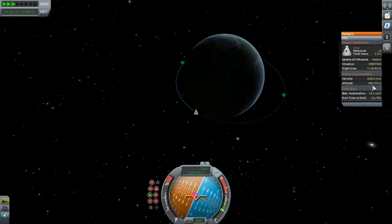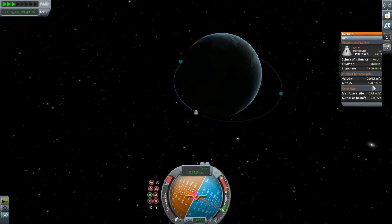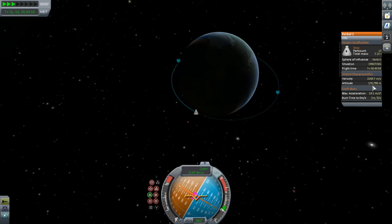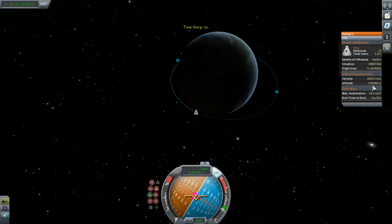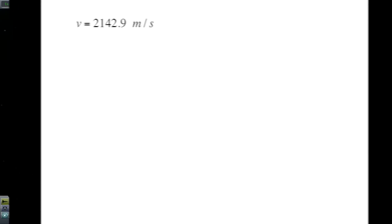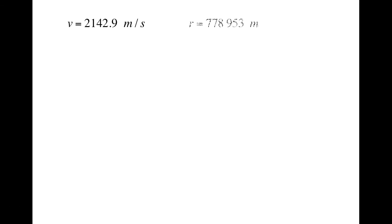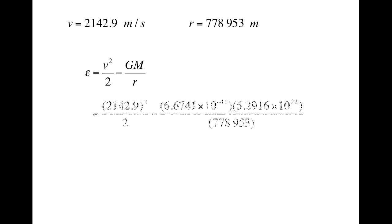You know stuff is getting real when Greek letters start getting involved. This gives us an epsilon of negative 2.24 times 10 to the 6 joules per kilogram. Now, by the law of conservation of energy, if we don't do any burns or dip into the atmosphere, this energy should be a constant no matter where we are in our orbit. For example, how about here? Our velocity is now 2,142.9 meters per second, and our altitude is 178,953 meters. I've modified the formula a bit by just taking out the little m's. Substituting gets us an epsilon of negative 2.24 times 10 to the 6 joules per kilogram once again. What do you know? KSP knows physics.